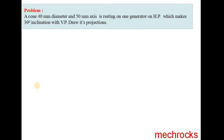Hi friends, welcome to Macrox. Today we will discuss about Projections of Cone. The cone has 40mm diameter and 50mm axis and is resting on one generator on HP which makes 30 degrees inclination with VP. The given cone of diameter 40 and axis length 50 has one generator on HP, and that generator makes 30 degrees with VP.